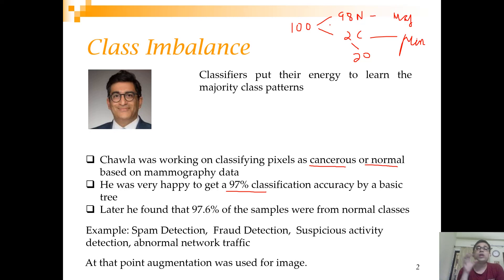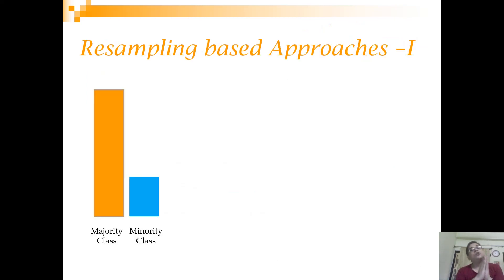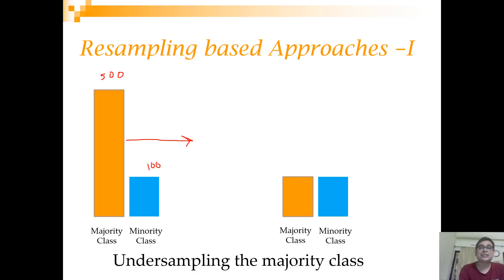The team was looking for something more general. One other approach which could be adopted was resampling based approaches. In your majority class, you have maybe 500 observations, and in the minority class, you have 100 observations. You want to bring them to the same scale so this imbalance is not there. What you can do is you can just take a random sample from the majority class and make your training set something like this, where both of them are 100. Such an approach is called undersampling or downsampling the majority class.